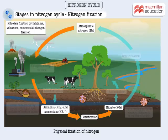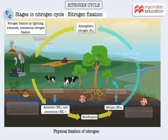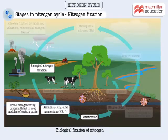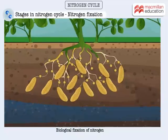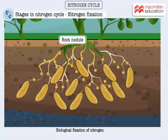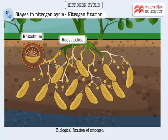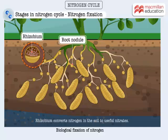Nitrogen is deposited from the atmosphere into soil mainly through precipitation. Now, let's understand how nitrogen fixation occurs through biological processes in the soil. Legumes, such as groundnuts and beans, have nodules in their roots. Observe closely the root nodules shown here. Rhizobium, a type of bacteria, lives in these root nodules. Rhizobium is a nitrogen-fixing bacteria that can convert nitrogen in the soil to useful nitrates.